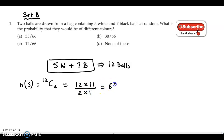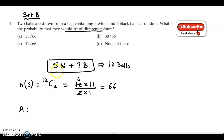So this value is 66, so n of S is 66. What is the probability that they would be of different colors? Suppose we define event A as getting balls of different colors — that means one white ball and one black ball. This event we define as A.